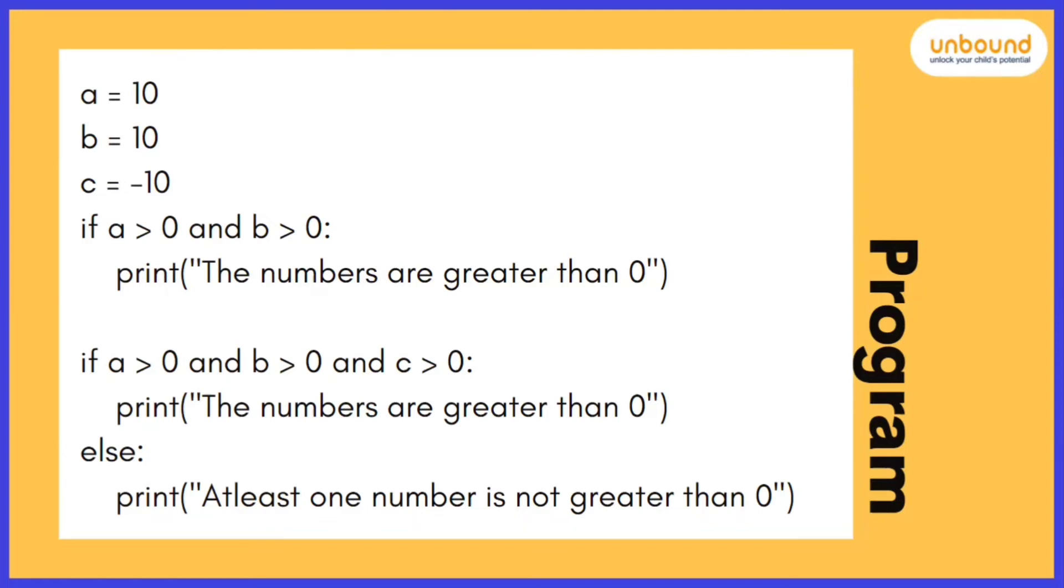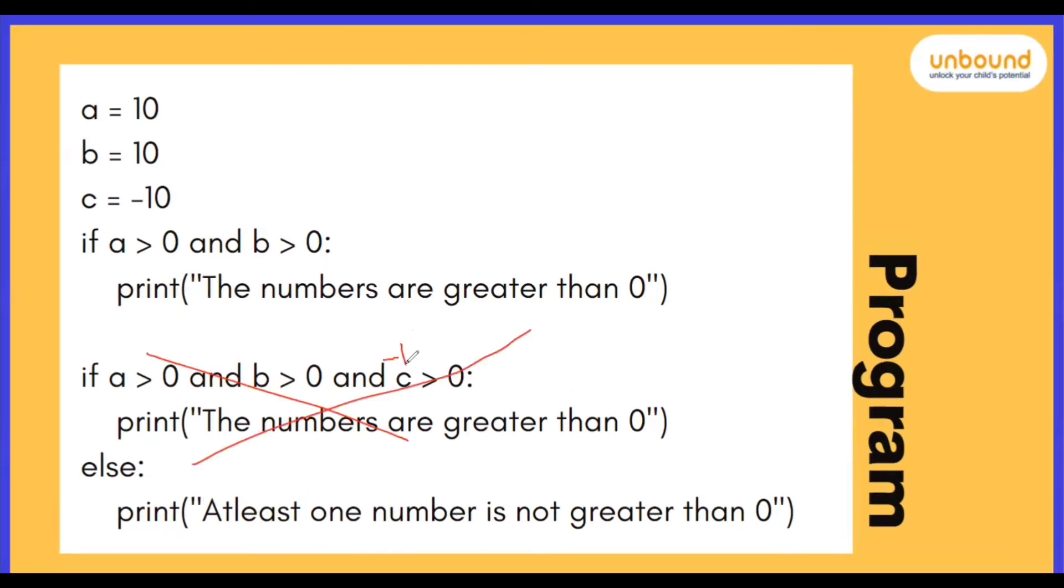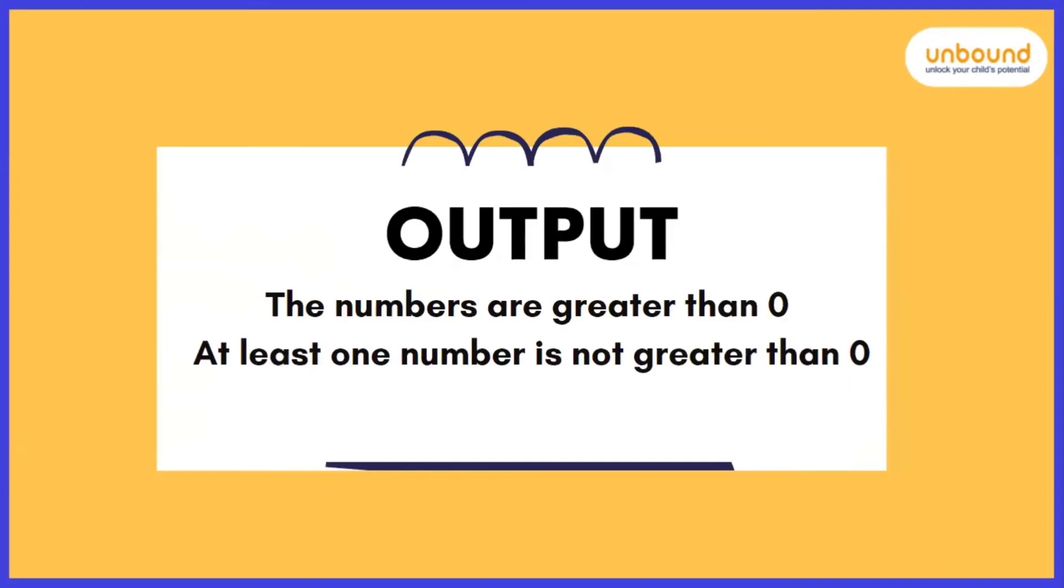Now if one condition also gets false, it will skip that statement because minus 10 is not greater than 0. So it will skip the statement and move to the next. Now else condition has no conditions for itself, so we will again print this statement. And here is an output.